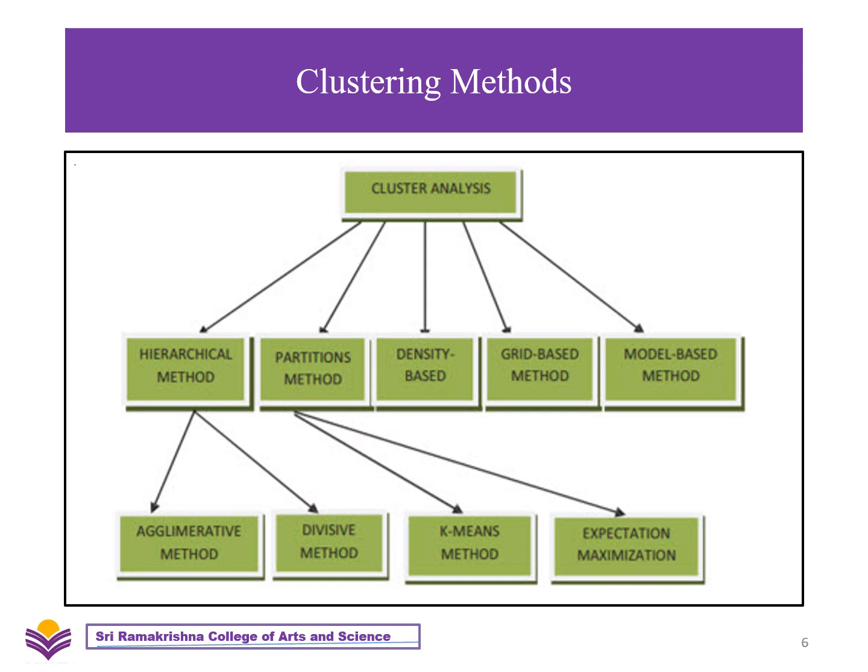Partitioning is divided into k-means and expectation maximization. Suppose we are given a database of n objects; the partitioning method constitutes k partitions of data, where each partition represents a cluster and k is less than or equal to n. It classifies the data into k groups and needs to satisfy the following requirements: each group contains at least one object, and each object must belong to exactly one group. Next is the density method — these algorithms produce clusters in determined locations based on the high density of dataset participants, aggregating range notation for group members in clusters to a density standard level.